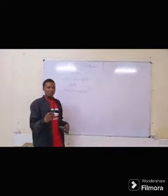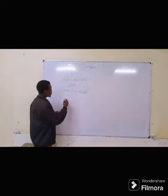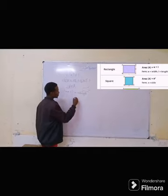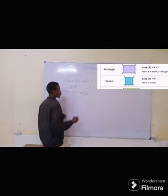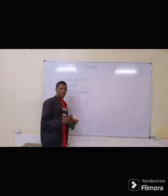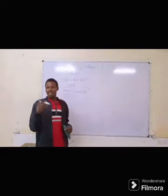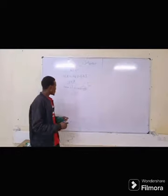So here, this is our rectangle. As we are finding the area of a rectangle, we have a formula, which is area is equal to the length times the width.